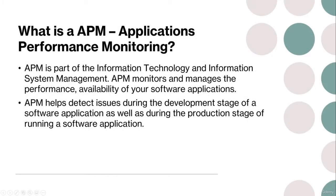What is APM — application performance monitoring? APM stands for application performance monitoring and is part of information technology and information system management. APM monitors and manages the performance and availability of your software applications. APM helps detect issues during the development stage of a software application, as well as during the production stage of running a software application.